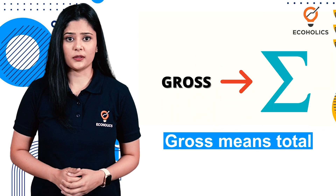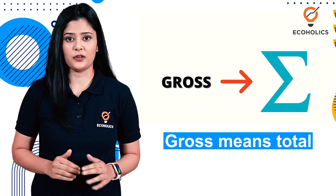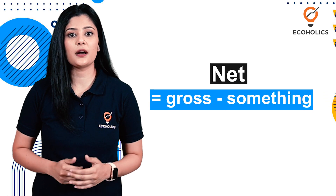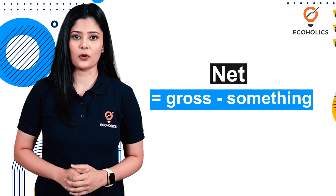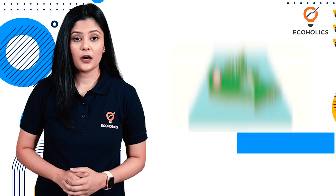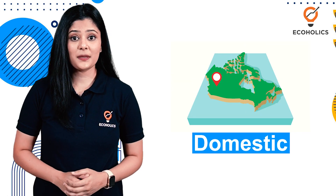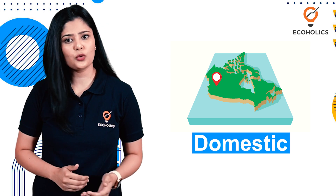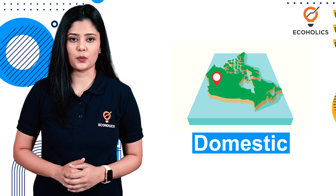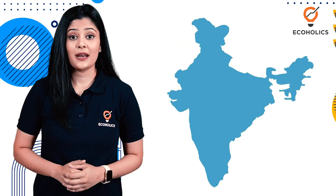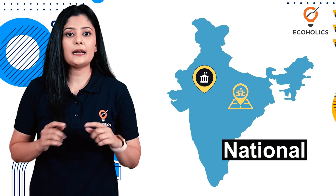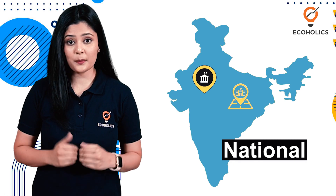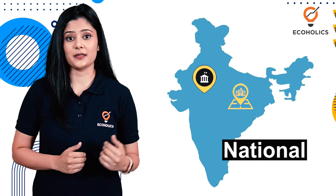Gross means total, covering everything. Net means what is left after deducting something from gross. Domestic means everything inside the territory of a country — it can include foreign embassies as well. National means everything that India owns, and it can include our embassies in other countries as well.